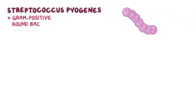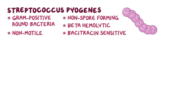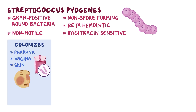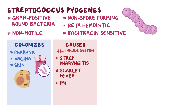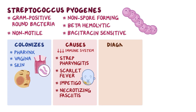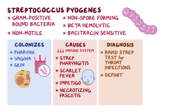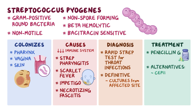As a quick recap: streptococcus pyogenes are gram-positive cocci that live in chains. They're non-motile, non-spore-forming, beta-hemolytic, and bacitracin-sensitive. They colonize the pharynx, vagina, or skin as normal flora, but in some cases they take advantage of a weakened immune system and cause infections like strep pharyngitis, scarlet fever, impetigo, and necrotizing fasciitis. Post-infectious sequelae include acute rheumatic fever and post-streptococcal glomerulonephritis. Diagnosis may be done with a rapid strep test for throat infections, but definitive diagnosis requires cultures from the affected site. Treatment is penicillin G, with alternatives including ceftriaxone and azithromycin.